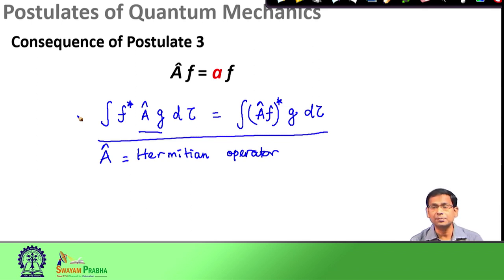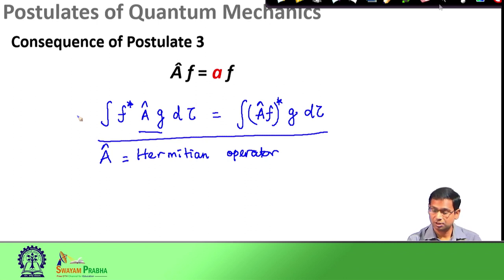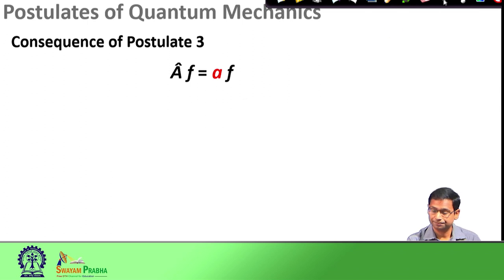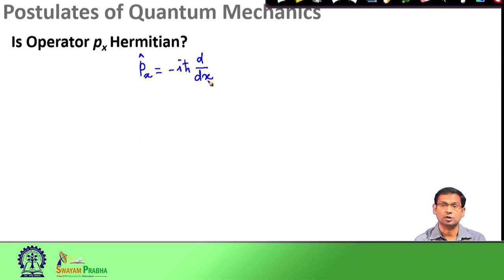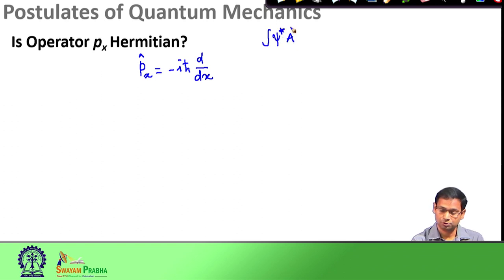Now we would take a few examples and see whether these operators are Hermitian operators or not. Our first example: we know that operator P_x is given by minus i h-bar d/dx. This is the functional form of the operator and now we will check whether this is Hermitian or not. We would write down the general formula to check whether the operator is Hermitian or not.